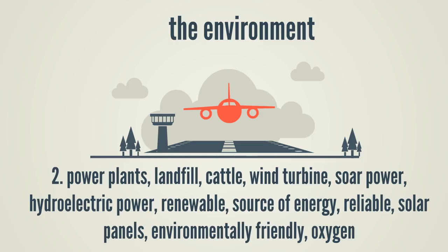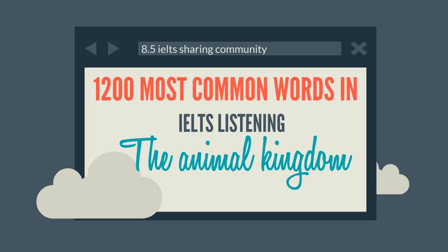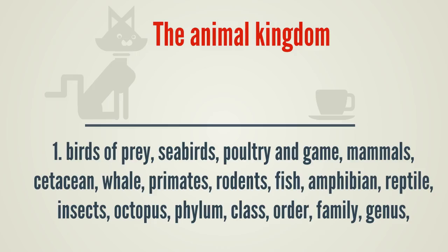Wind Turbine, Hydroelectric Power, Renewable Source of Energy, Reliable, Solar Panels, Environmentally Friendly, Oxygen, Chemical Free, Desert, Degradation, Vegetation, Sea Level, Ocean Currents, Soil Conditioner, Coal, Fossil Fuels, Firewood, Drought, Contaminated. The Animal Kingdom: Birds of Prey, Seabirds, Poultry and Game, Mammals, Cetacean, Whale, Primates, Rodents, Fish, Amphibian, Reptile, Insects, Octopus, Phylum, Class, Order, Family, Genus.